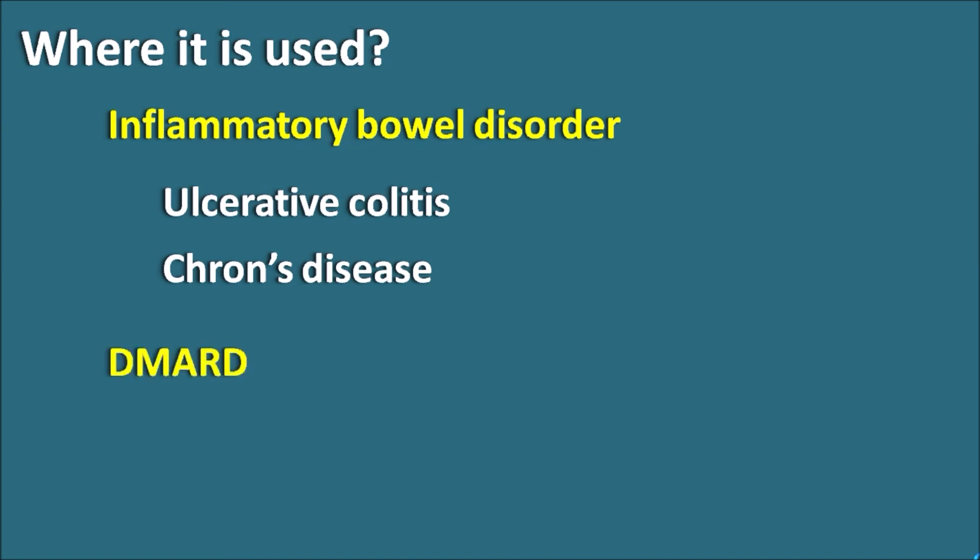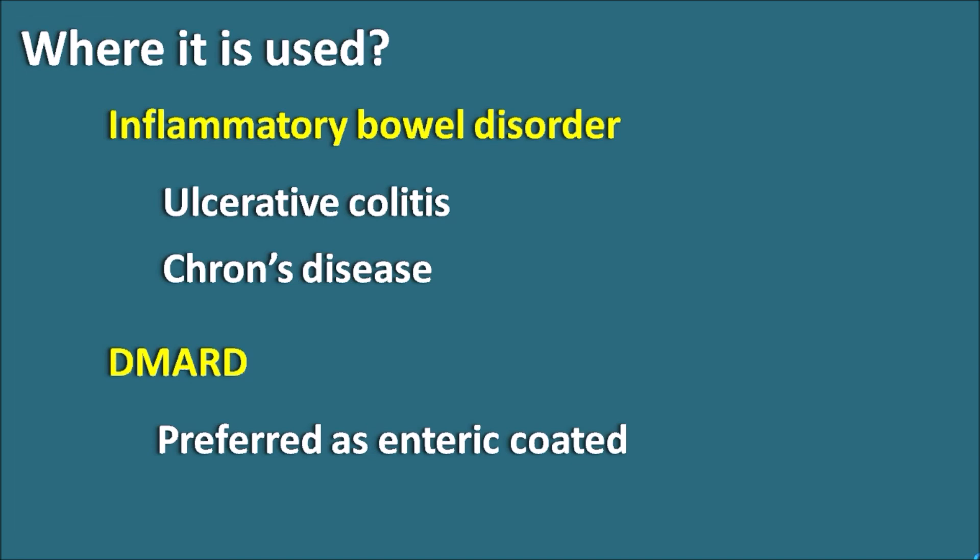Another important use of sulfasalazine is as a disease-modifying anti-rheumatic drug (DMARD). It modifies the disease state in rheumatoid arthritis, improves symptoms, and relieves joint pain. In the treatment of rheumatoid arthritis, sulfasalazine is preferred as an enteric-coated tablet as it reduces gastrointestinal side effects. In summary, sulfasalazine is a prodrug converted into 5-aminosalicylic acid and sulfapyridine, both producing anti-inflammatory effects, used in inflammatory bowel disorder and rheumatoid arthritis.